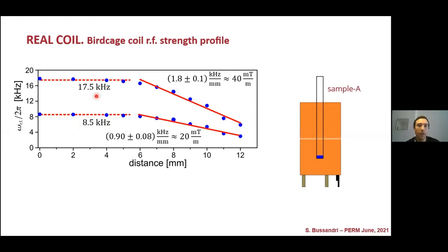which corresponds to an average variation of 40 millitesla per meter at 20 millitesla per meter. You can see that when we double the RF power, we obtain the double of the inhomogeneities.